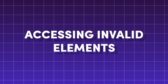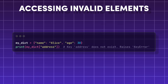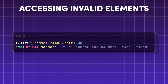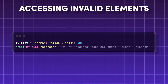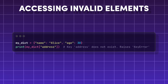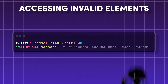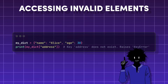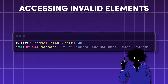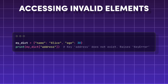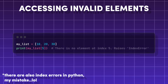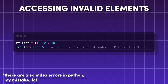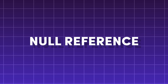Accessing invalid elements. This happens when you try to use something from a list, string, or array that doesn't exist. In Python, it's called a key error because of key-value pairs in dictionaries. It's referred to as an index error in other languages.